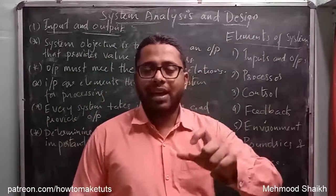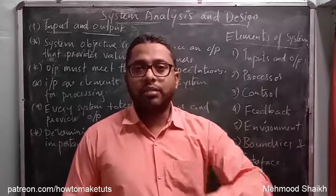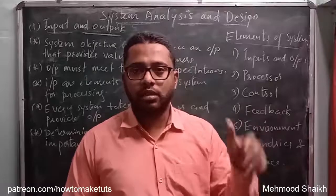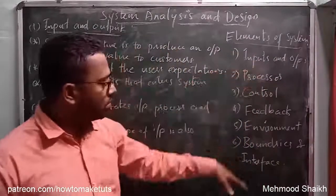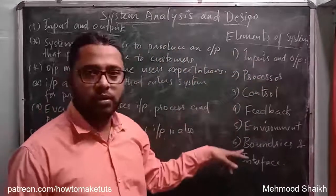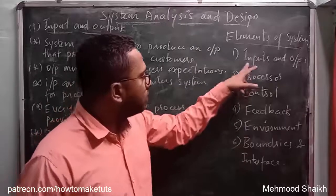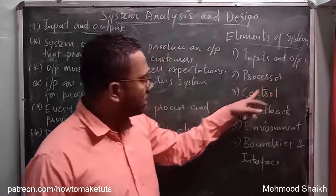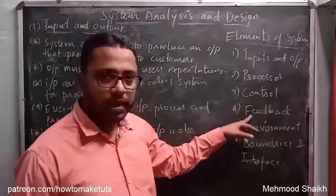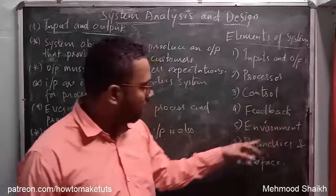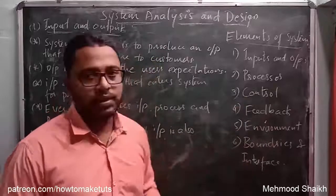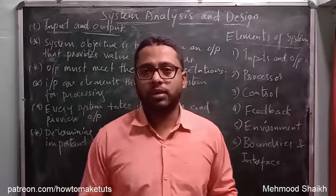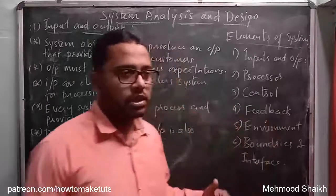Each and every system will have some elements in it, and we will discuss what those elements are one by one. I have listed down those elements: the first element is inputs and outputs, the second is processor, the third is control, the fourth is feedback, then environment, and the last one is boundaries and interface.